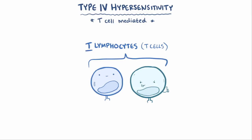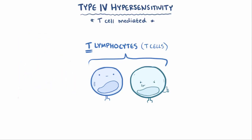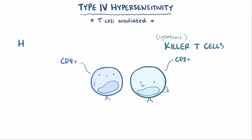T cells are called T cells because they mature in the thymus, and the two types of T cells that cause damage to tissues in type 4 hypersensitivity are CD8-positive cells, also known as killer T cells or cytotoxic T cells, as well as CD4-positive T cells, also known as helper T cells.